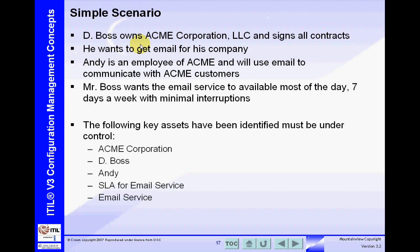Let's look at a simple scenario. Here we have the Acme Corporation, owned by D-Boss, and he signs all the contracts. He wants to get an email service for his company, and he's an employee of the Acme Corporation who will be using email to communicate with the Acme customers — he's a sales rep. Mr. Boss wants the email service to be available most of the day, seven days a week, with minimal interruptions, which sounds reasonable.